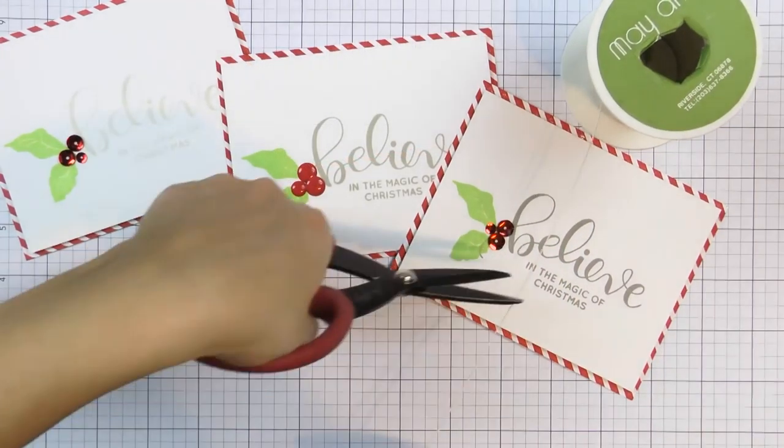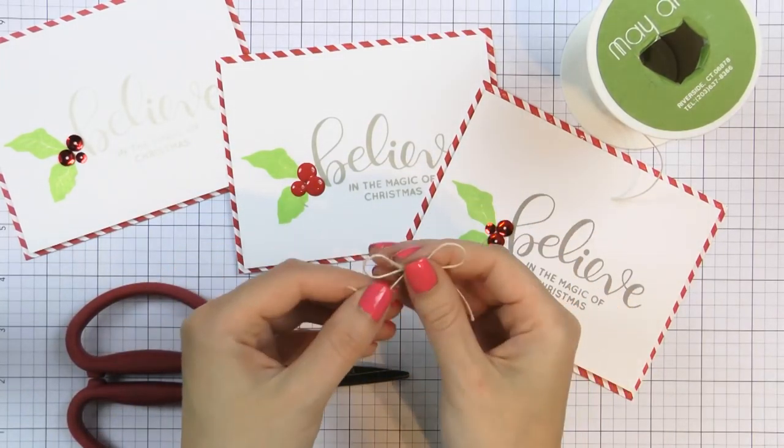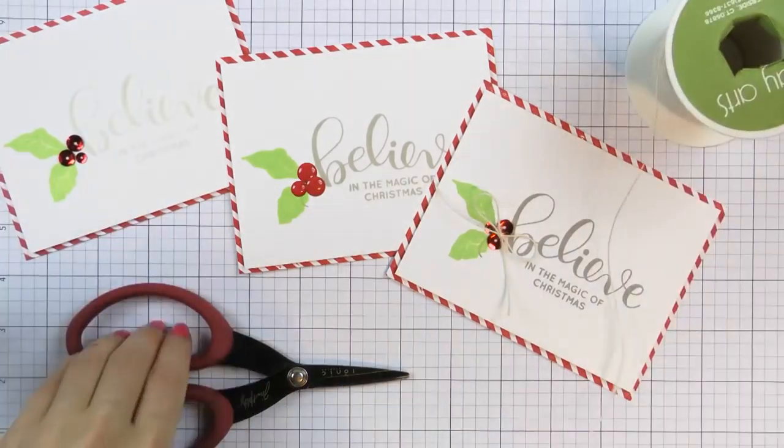I also added a small bow to each of my cards. The bows were made out of natural twine and I adhered them down using glossy accents glue.